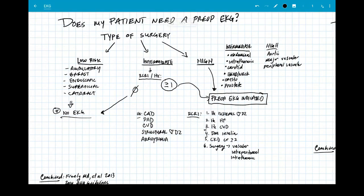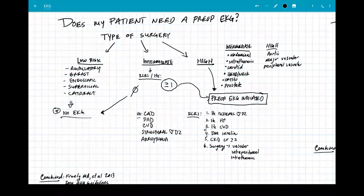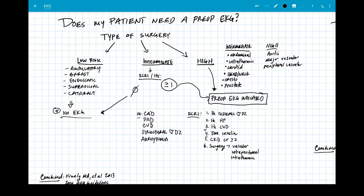So, going over this, does my patient need a pre-op EKG? If they have low-risk surgery, that being ambulatory surgery, breast surgery, endoscopic, superficial, or cataract surgery, no EKG is indicated. If the patient is having intermediate-risk surgery, that is intra-abdominal, intrathoracic, carotid, head and neck, ortho, or prostate surgery, and the patient does not meet any of the revised cardiac risk index or history that we talked about, then no EKG is indicated. If they meet at least one of these criteria, then an EKG is indicated.